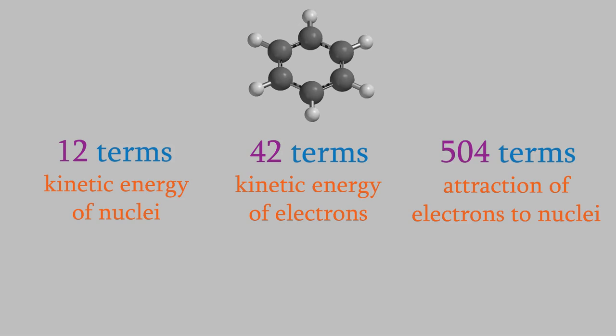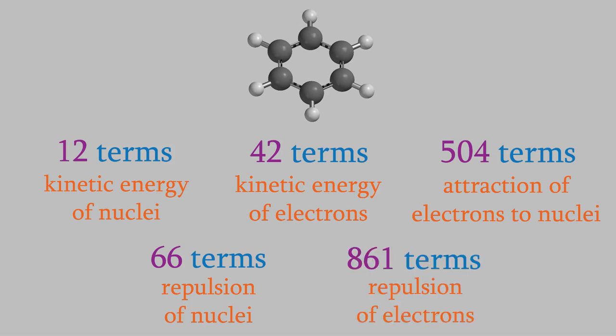Meanwhile, each of the nuclei is repulsed by each of the other nuclei, for a total of sixty-six repulsion terms. And finally, each of the forty-two electrons is repulsed by all the others, giving us a total of 861 repulsion terms for the electrons. For a grand total, that gives us fourteen hundred and seventy-three terms in the Hamiltonian for benzene. Luckily, there are all kinds of shortcuts that allow a computer to solve the calculation using the Hartree-Fock method very quickly for a molecule like benzene, but it would be a really difficult task for a human with pen and paper.